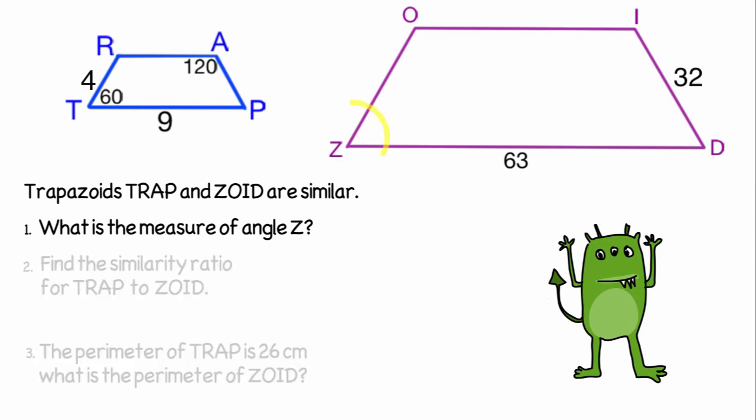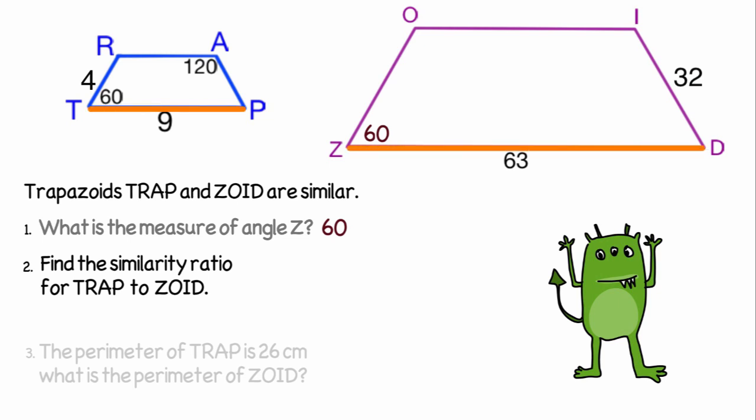Since similar polygons corresponding angles are equal, the angle z must be equal to 60 since its corresponding angle is t, and that measures 60 degrees. To find the similarity ratio, we simply find the measure of corresponding sides for trapezoid. We could use 9 to 63, which simplifies to one-seventh.